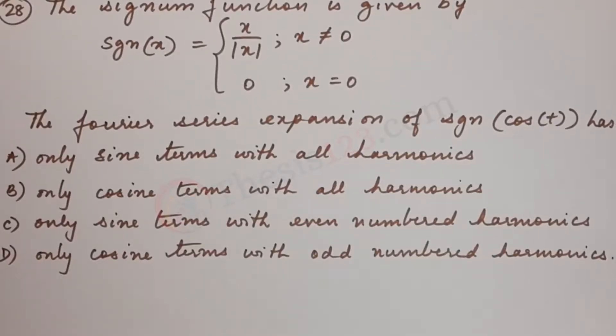Here's the next question number 28. The signum function is given by signum of x equals x by mod x where x is not equal to 0, and 0 where x equals 0.